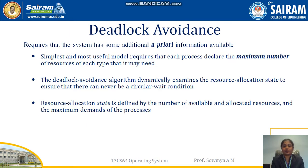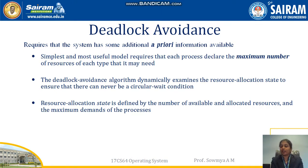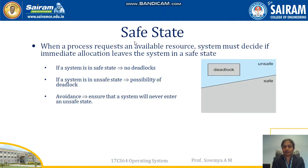Next is deadlock avoidance. If you cannot prevent the deadlock and there are chances of it occurring, avoid it. The simplest way is to allocate the maximum number of resources available to a process which can be executed with those available resources. Make sure the process execution is under a safe state.